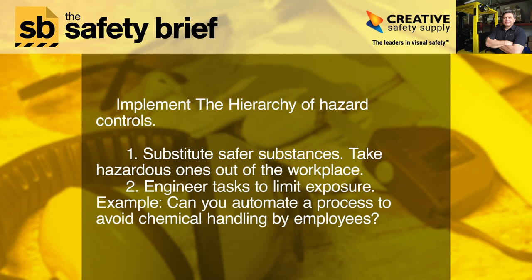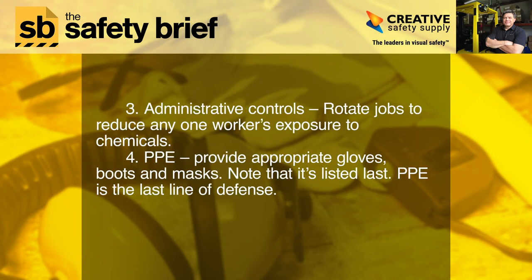Three, administrative controls: rotate jobs to reduce any one worker's exposure to chemicals. Four, PPE — personal protective equipment: provide appropriate gloves, boots, masks, and other items. Note that PPE is listed last because it is the last line of defense.